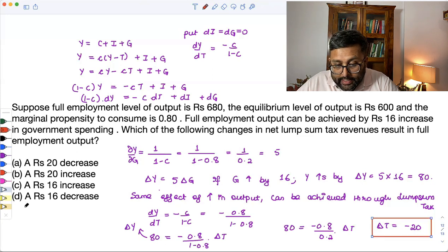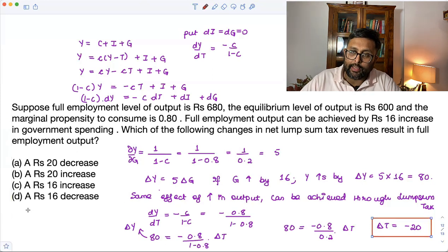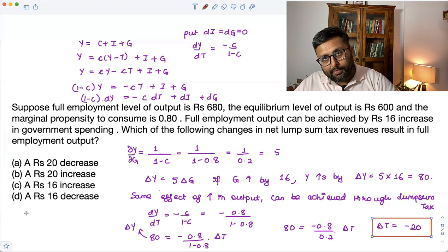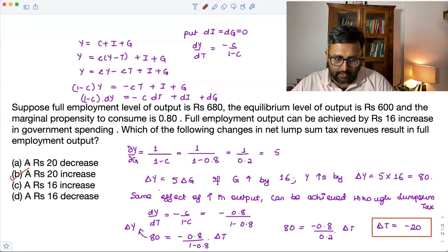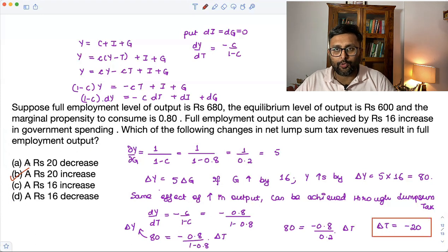So if you decrease taxes by 20, you can have the same effect of increase in output as you had by increasing government expenditure by 16. So that is the idea. Okay. Thank you. But I hope this was useful to you. Thank you.